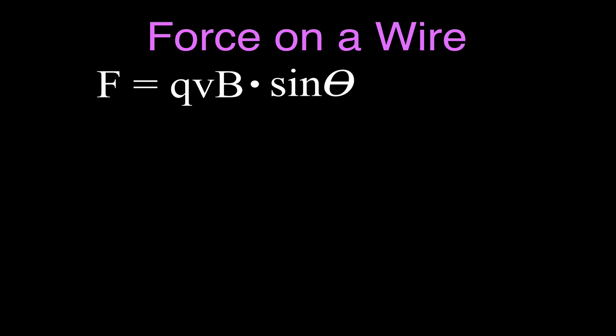Now here's the equation, but this is not the equation we use to calculate the force on a wire. This is the equation we used in the previous video to determine the force on a charge that's moving through a magnetic field, because this is Q for charge, V for velocity, and B for magnetic field. So this is the equation we use to determine the magnitude of the force on a charge.